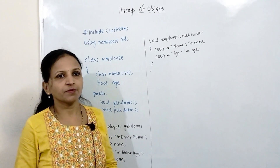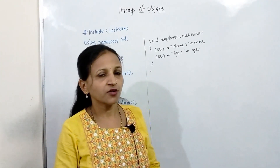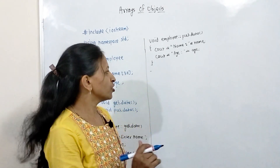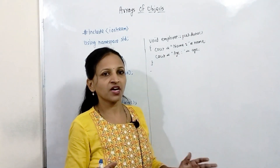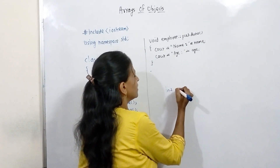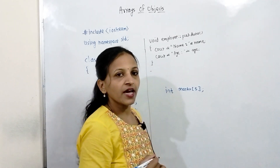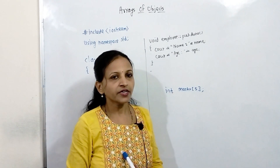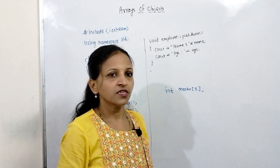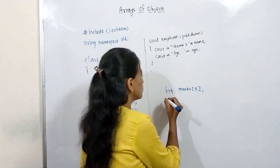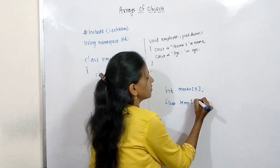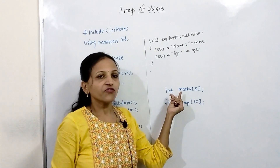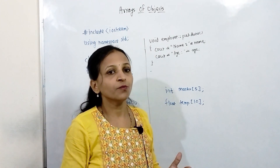Already you are familiar with the Arrays concept. An array is nothing but a group of similar kind of data elements. For example, if you want to store marks of 5 subjects of any student, you will create one array of type integer — int marks[5]. Similarly, to store temperatures of 10 cities, you can create an array of floats like float temp[10]. These are just basic data types: int and float. We can create arrays of basic data types.